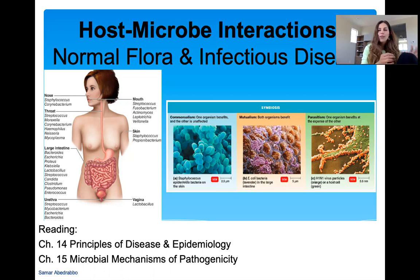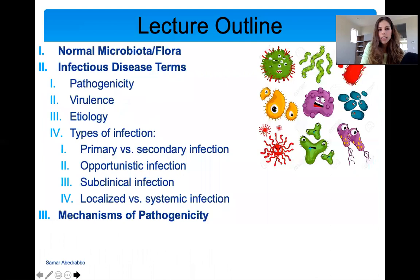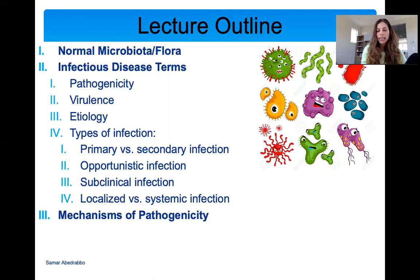We're going to focus on two opposite things, but they both refer to host-microbe interactions: the beneficial and the pathogenic ones. In this lecture, we'll begin by talking about the normal microbiota — your flora — which are interchangeable terms. Then infectious disease terms, and then how a microbe actually becomes pathogenic. Why do we have some bacteria that are pathogenic and some that are not? That's where mechanisms of pathogenicity come in.